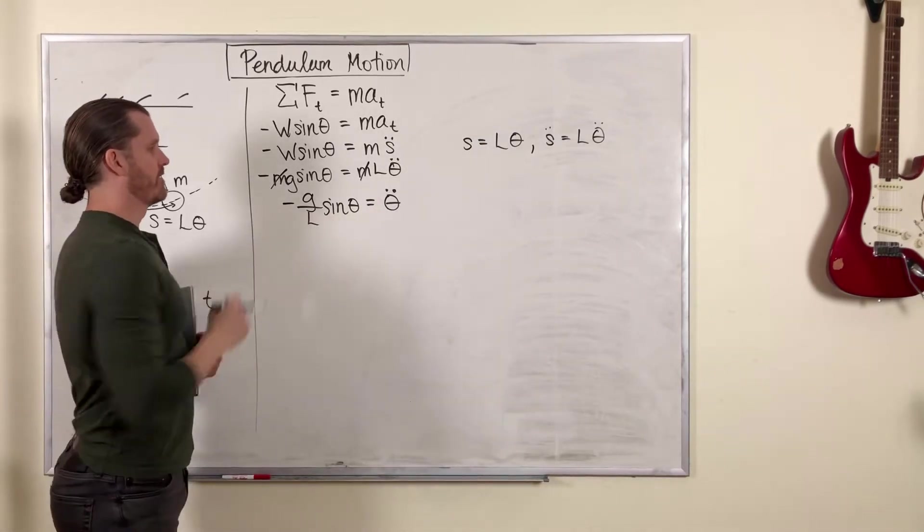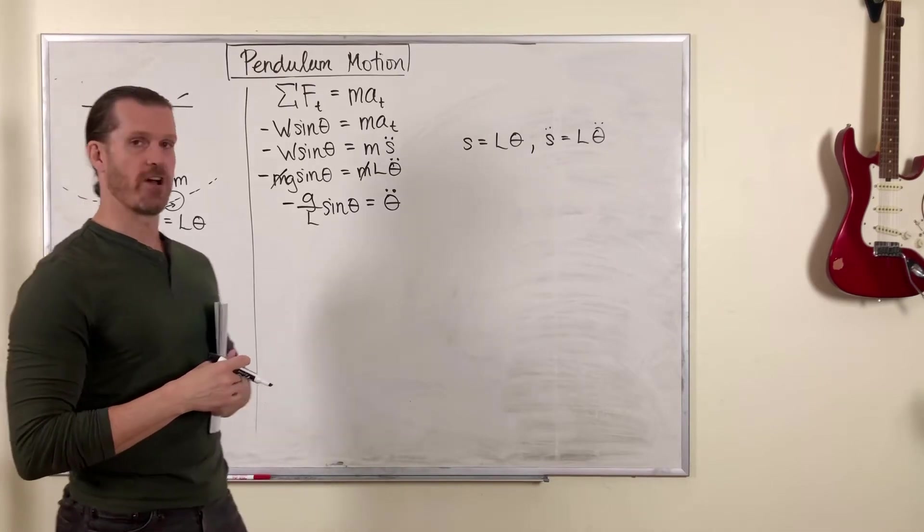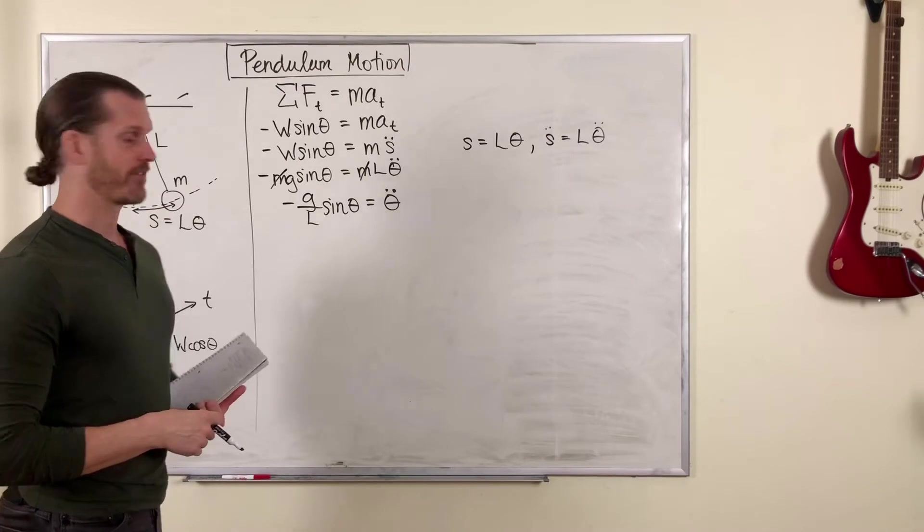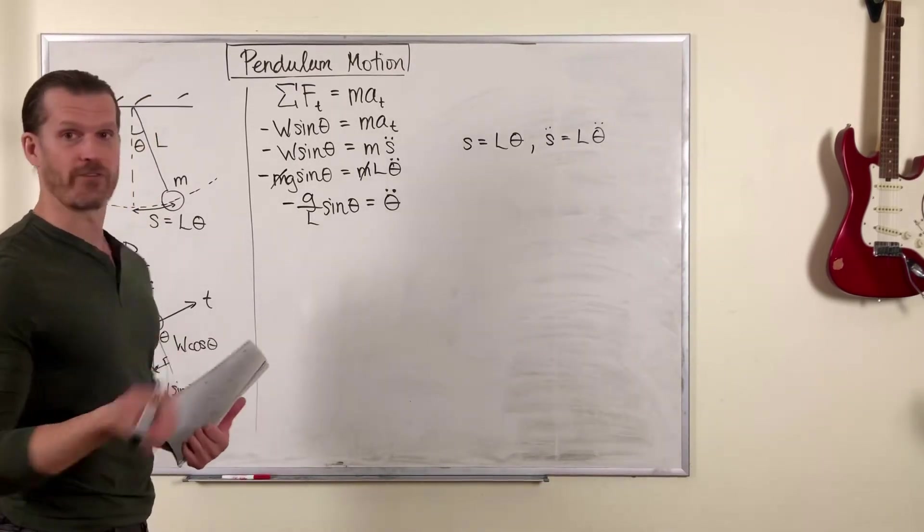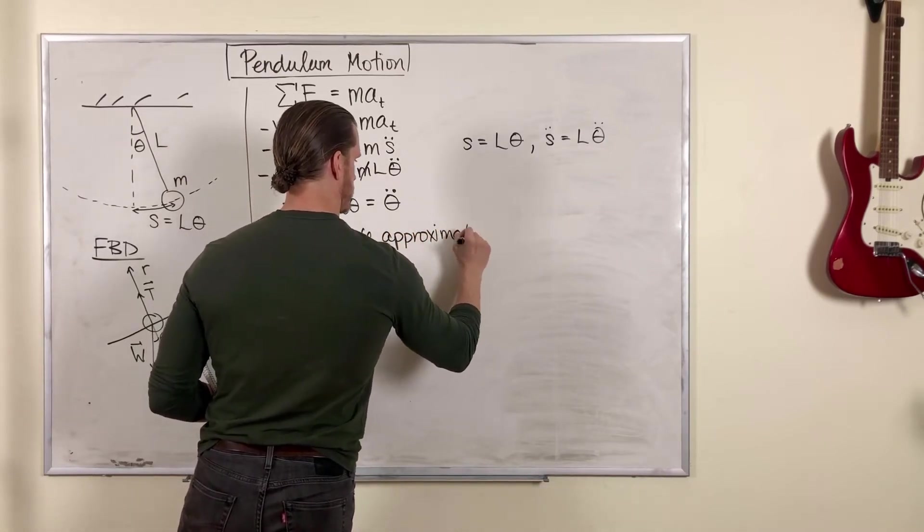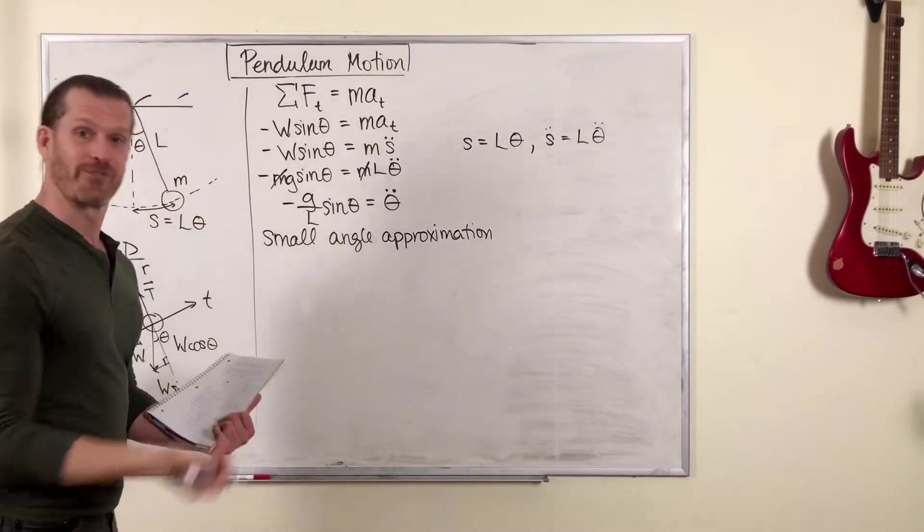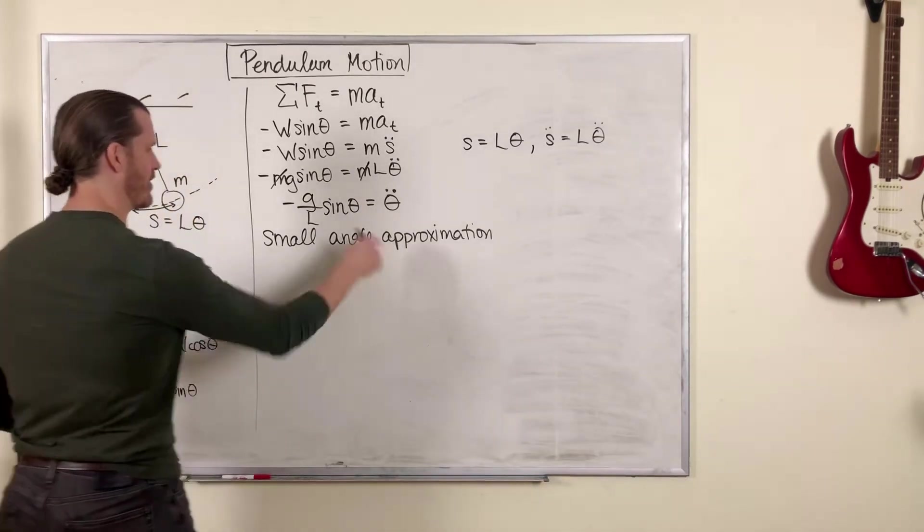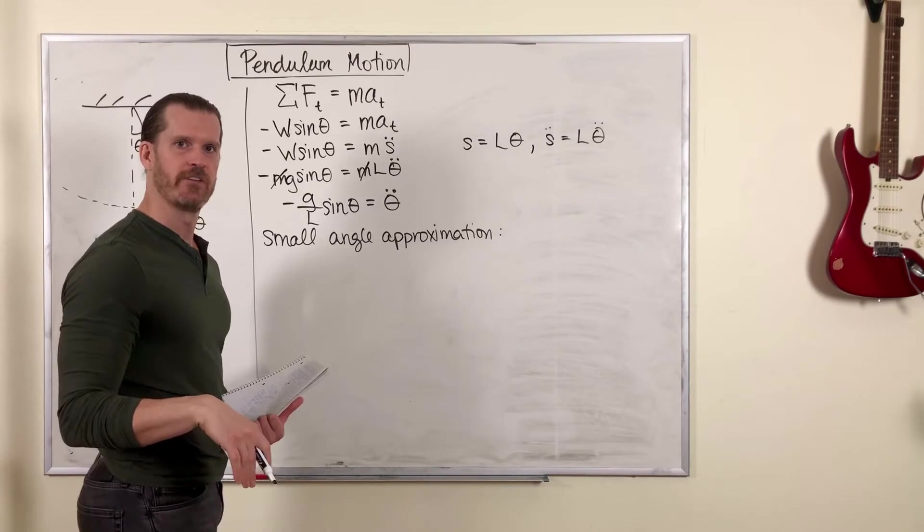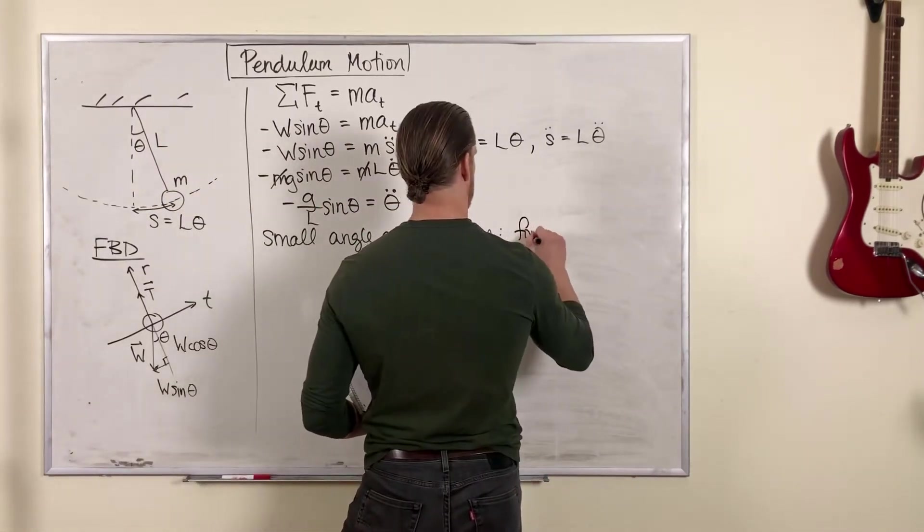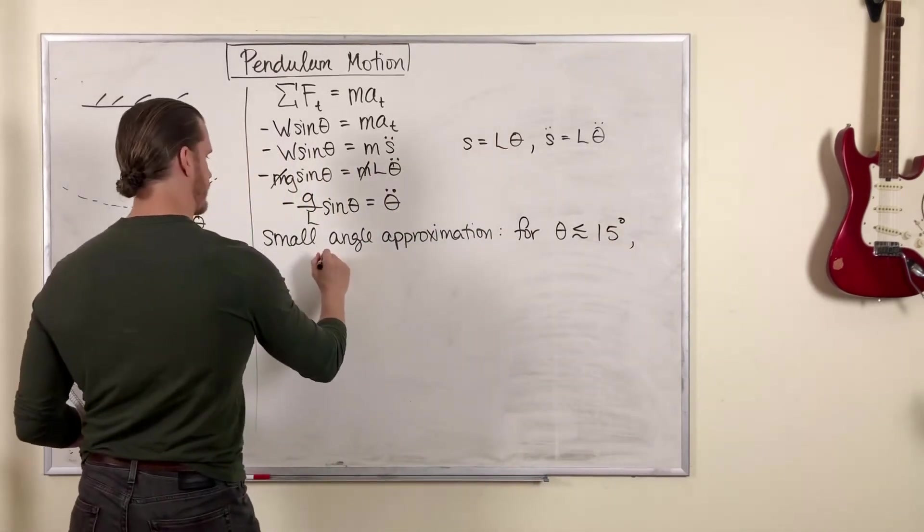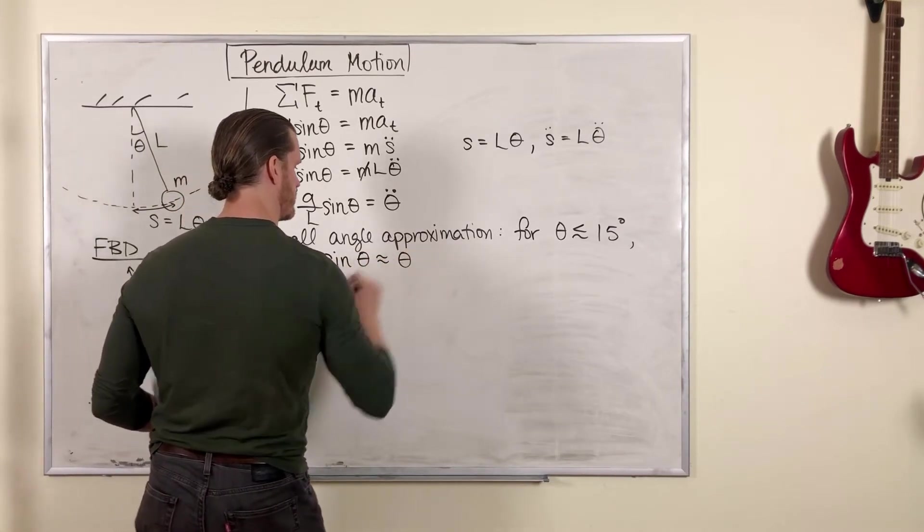Now, this equation is kind of a complicated equation to solve. In fact, you can't really solve it even using calculus. So we need to use an approximation. It's called the small angle approximation. This also comes from calculus. It comes from series expansions. And what it says is that as long as theta is sufficiently small, and by that I mean maybe like 15 degrees or smaller, maybe 20 degrees or smaller. So for theta less than approximately, I don't know, 15 degrees.